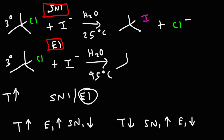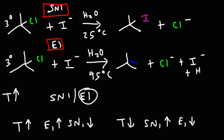In the second example, because we're getting elimination, we're going to form a double bond. Chloride will be expelled, and water is going to abstract a proton. We get iodide and H3O+. But if you were to subtract water as both a reactant and a product, you can treat this as HI — it's basically H+ and I−.